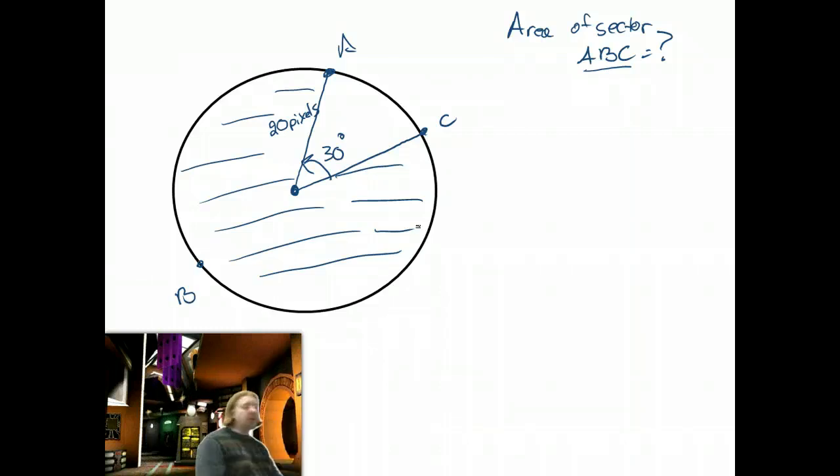Now the book has a formula. Let me write that one down so you have it if you're a big formula junkie. The area of a sector is pi r squared times m over 360.